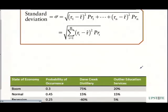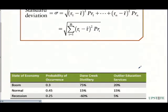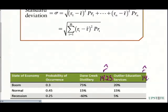We're going to look at these two companies again: Dane Creek Distillery and Outlier Education Services. We want to compute r-hat here. R-hat on Dane Creek Distillery is going to be 14.25%, and r-hat on Outlier Education Services is 14%. Now we're going to compute the standard deviations of each of these. We'll first do Dane Creek Distillery.